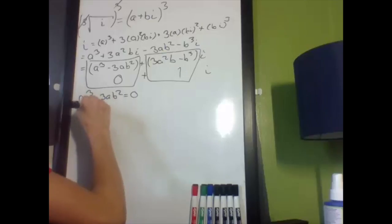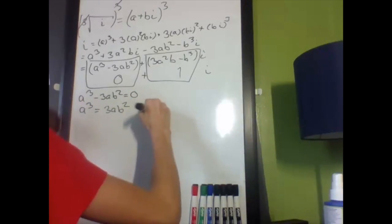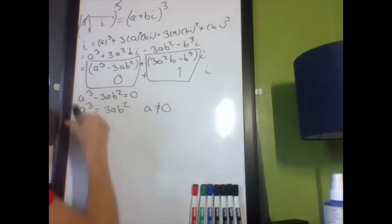So I get a cubed minus 3ab squared equals 0. Now I could add that to both sides, a cubed equals 3ab squared. Now, if a is not equal to 0, I could just divide both sides by a. So I get a squared equals 3b squared.